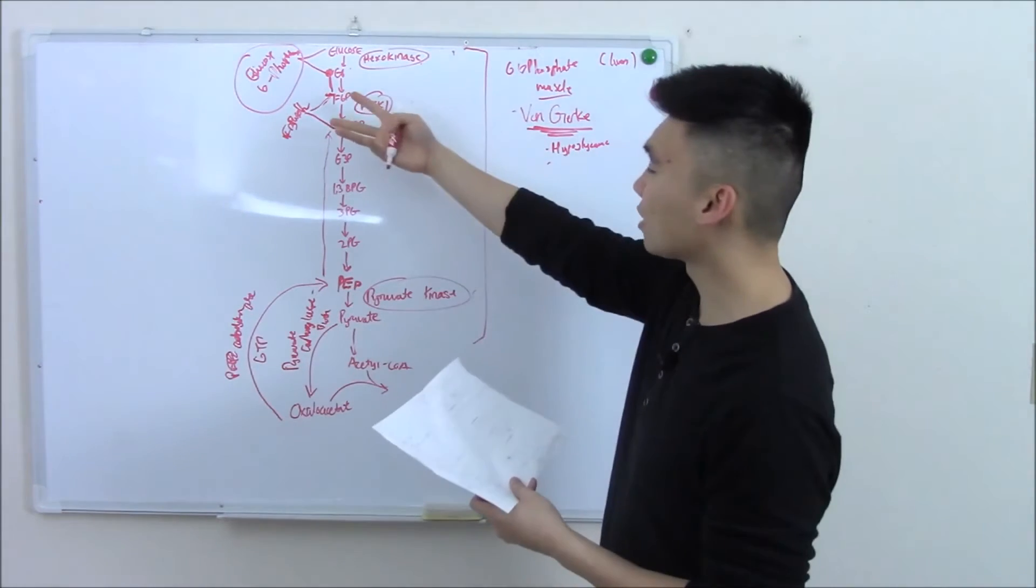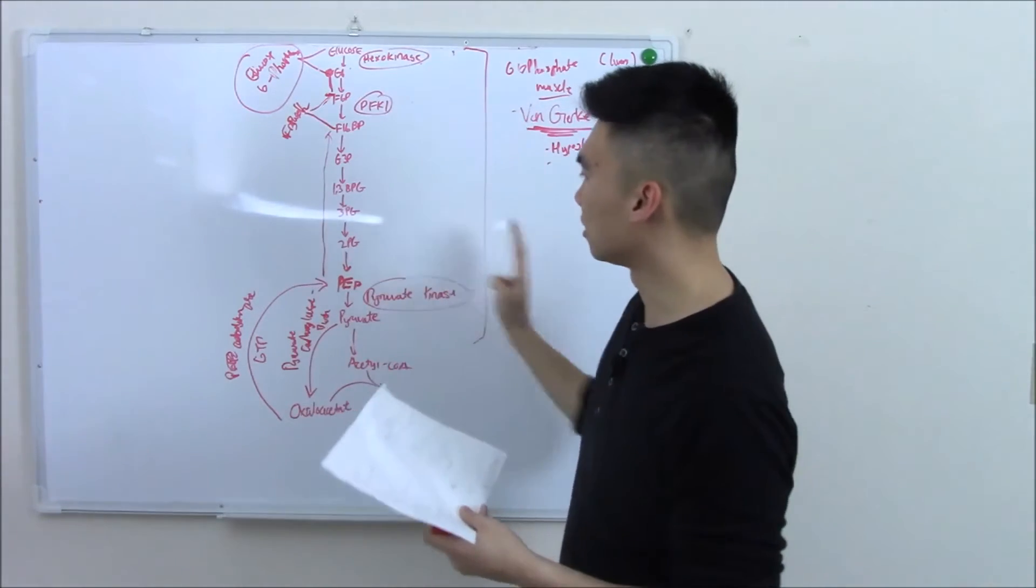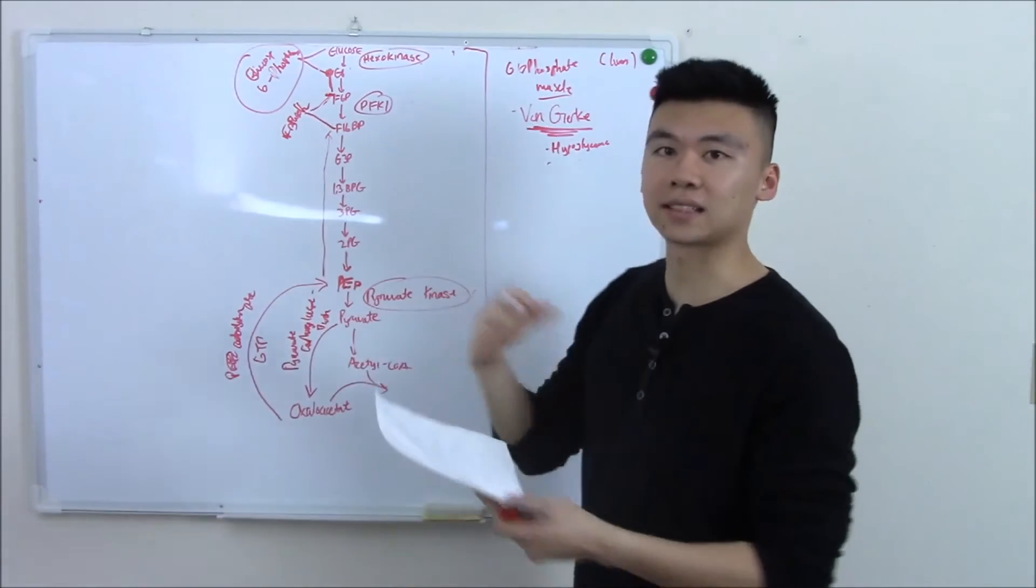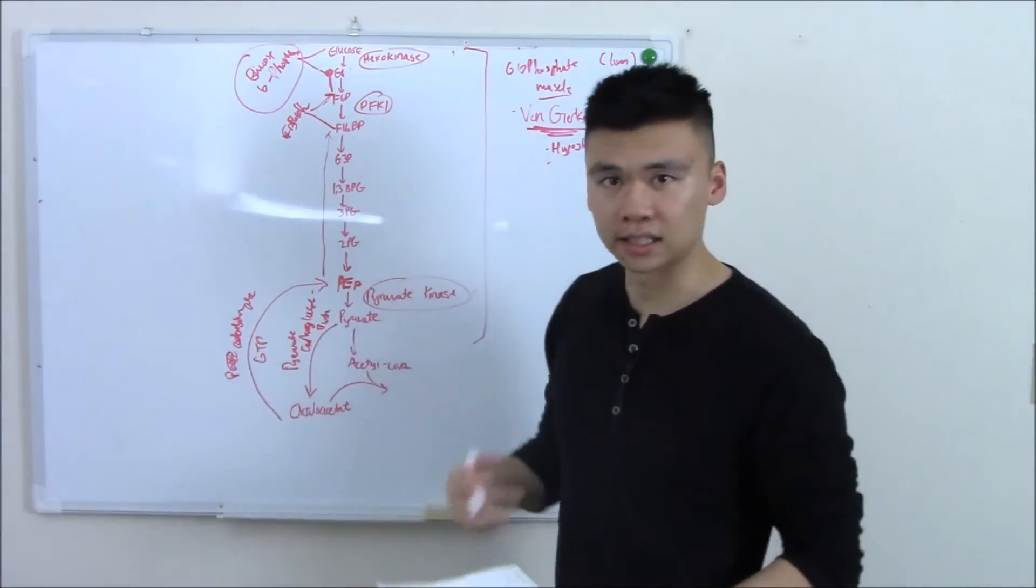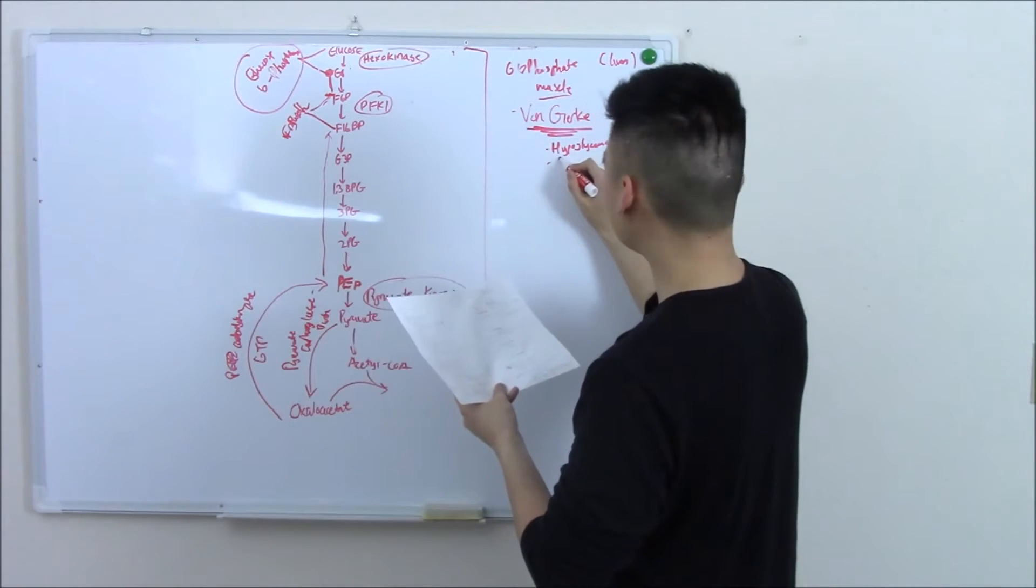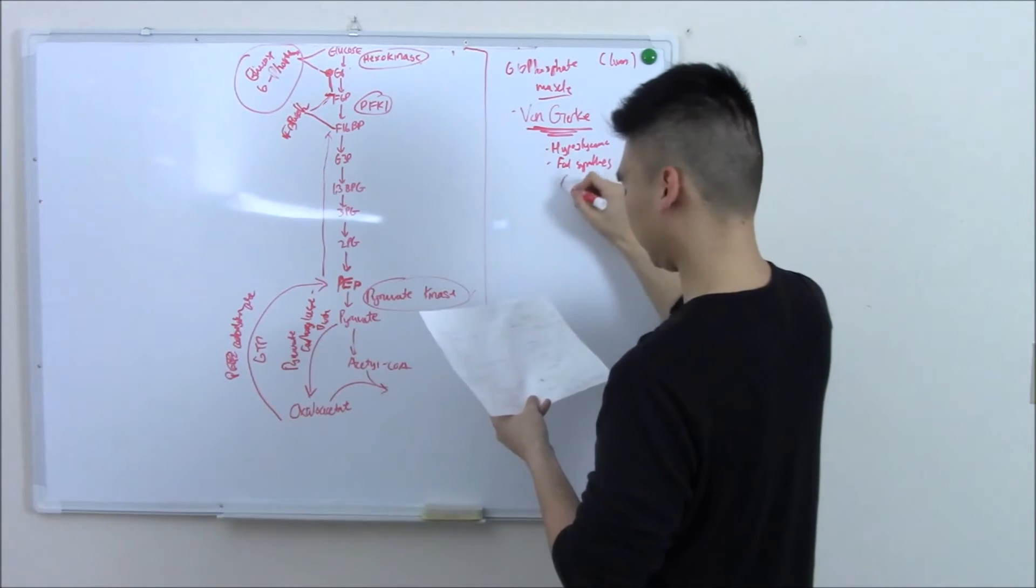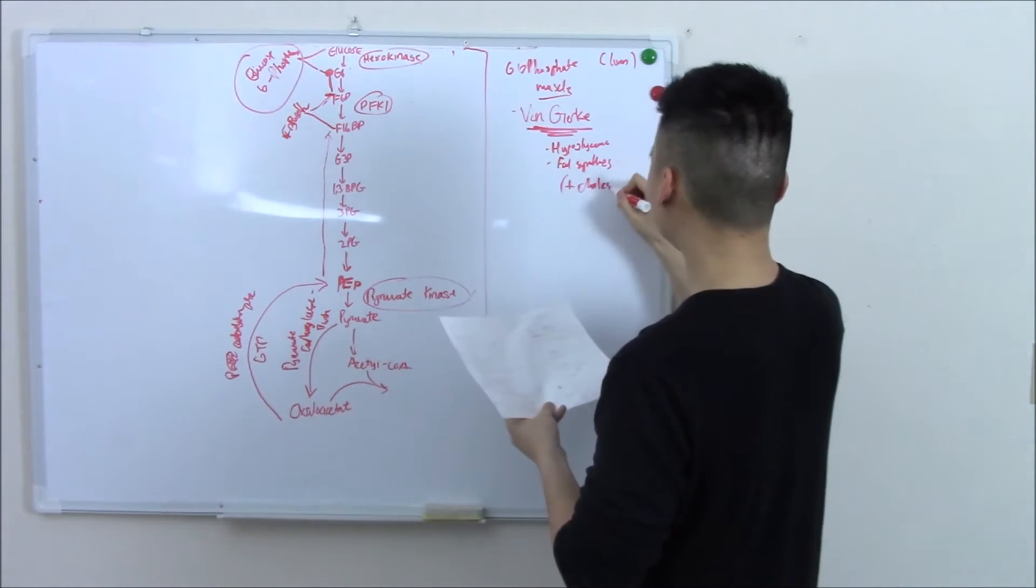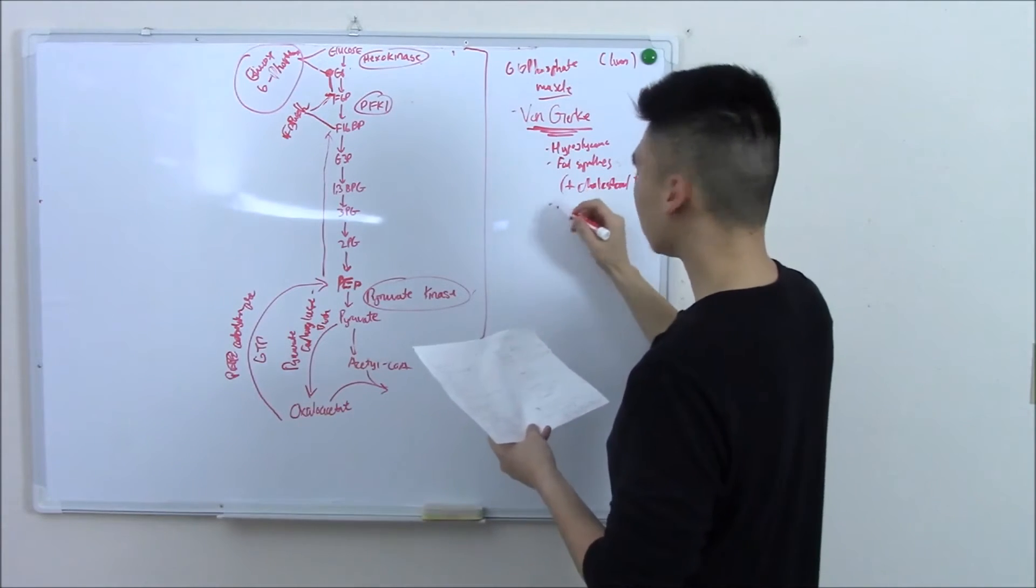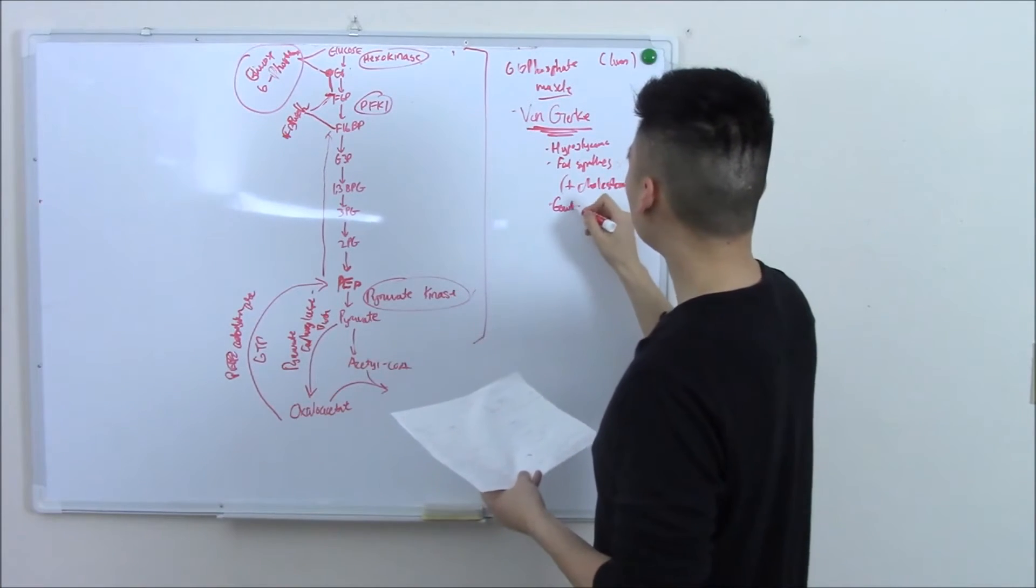Not only that, you get trapped in the cycle and you start shunting products in different places. You start shunting into fat synthesis and you start shunting to DNA synthesis, causing lactic acid and stuff like that. So you get increased fat synthesis - maybe we'll have increased cholesterol, triglycerides, shunting into lactic acid causing gout.